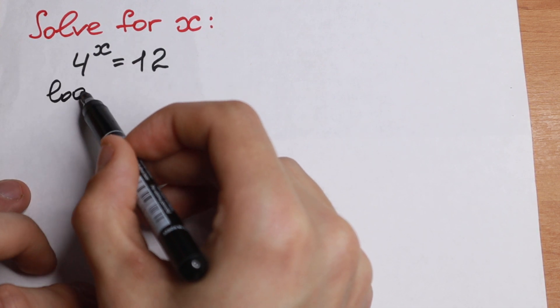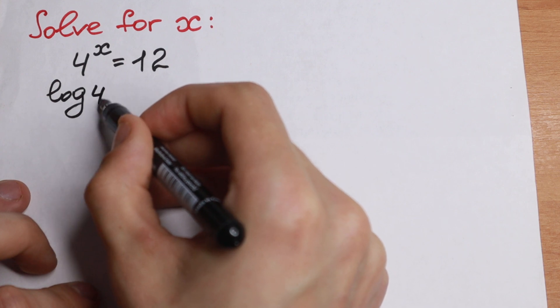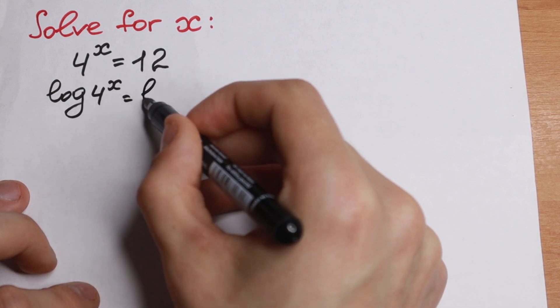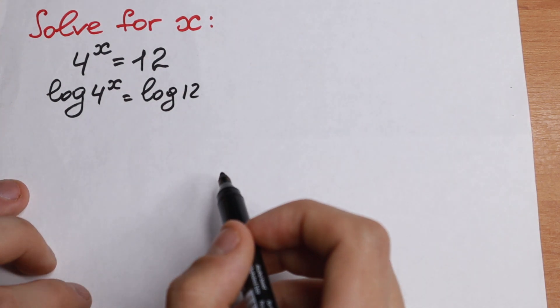First of all, let's take log from both sides. log 4 to the power x equals log 12. We can do this by taking log from both sides.